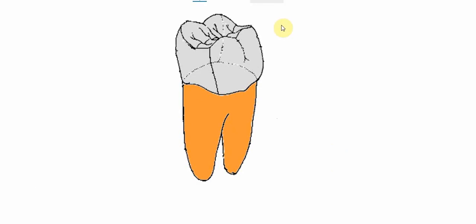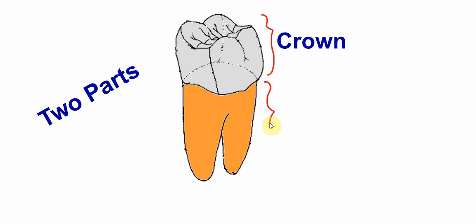So the human tooth comprises of two parts. This portion is the crown portion of the tooth. And below the crown portion, this is the root portion of the tooth.